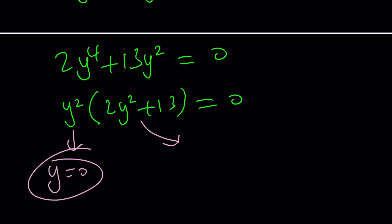Because if you set this equal to 0, you get y^2 equals negative 13 halves. Uh-oh, there are no real solutions. But why don't we find the complex solutions? Some people are going to be saying that.